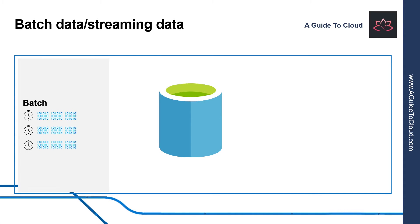Let's look at some of the advantages of batch processing. Large volumes of data can be processed at a convenient time. It can be scheduled to run when computers or systems might otherwise be idle, such as overnight or during off-peak hours. Some of the disadvantages of batch processing are the time delay between ingesting the data and getting the results.